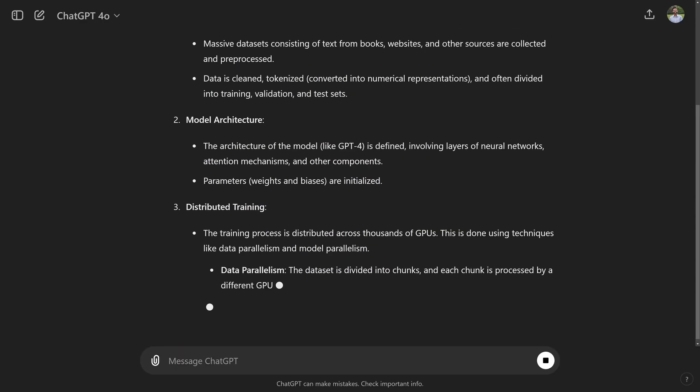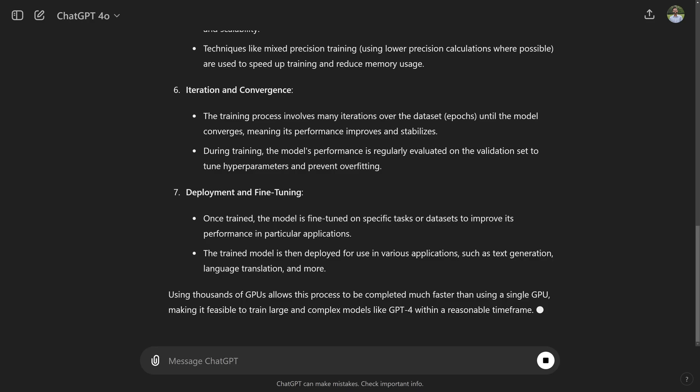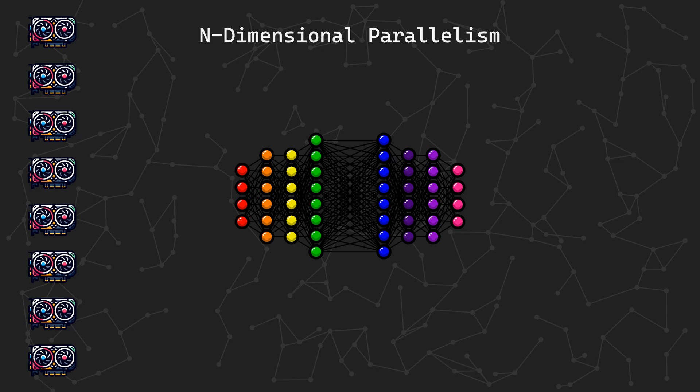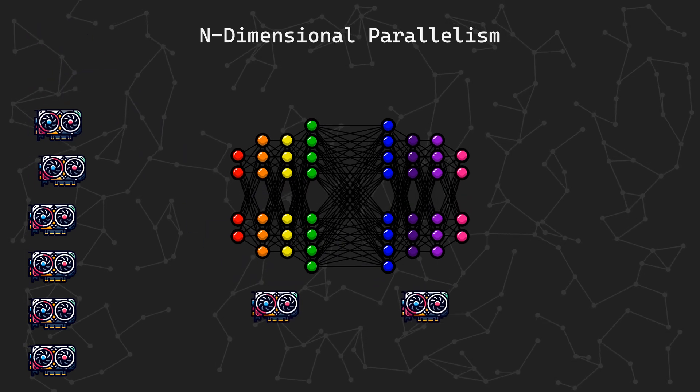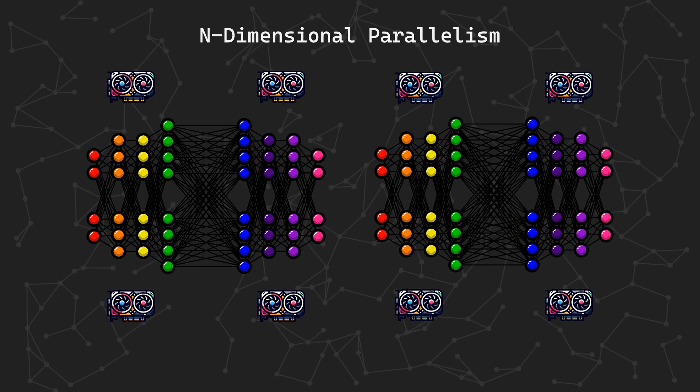6000 years is how long it would take if I started training GPT-4 on the latest and greatest graphics card from NVIDIA, the A100. So how did OpenAI accomplish this in just 90 days? Well, they used some nifty parallel algorithms to spread out the training across 25,000 GPUs.